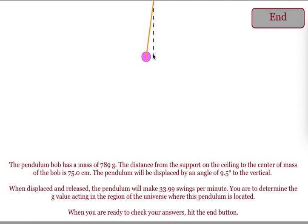In this problem, we're trying to find the strength of the gravitational field that is creating the oscillation of the pendulum that is described below. So, we're looking for our g value.